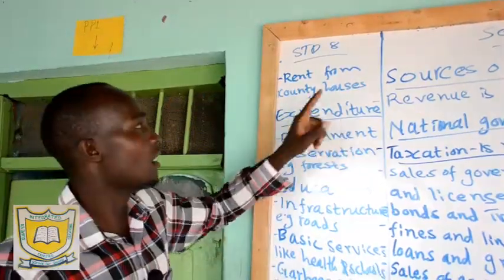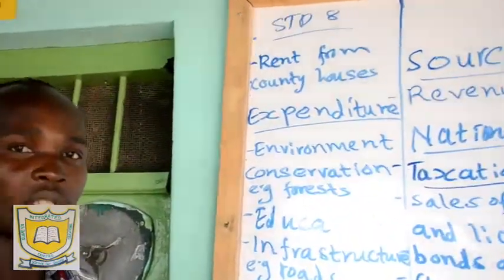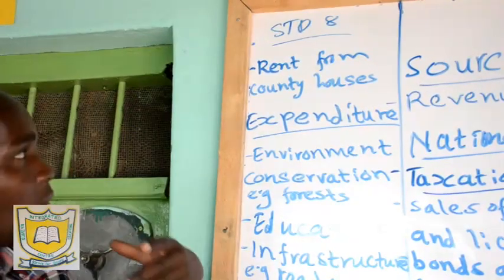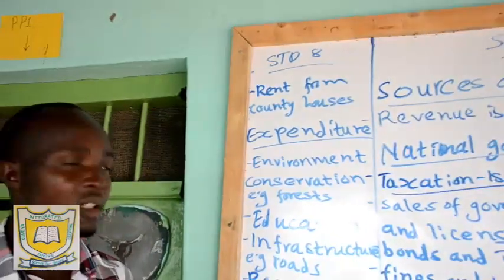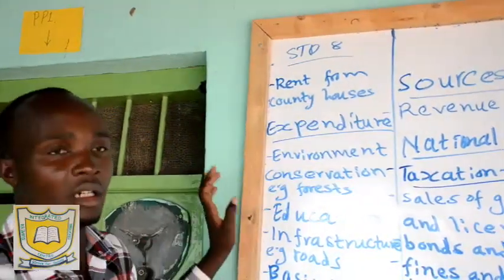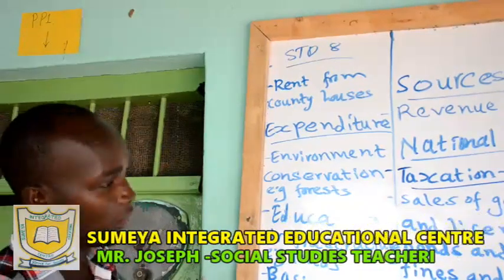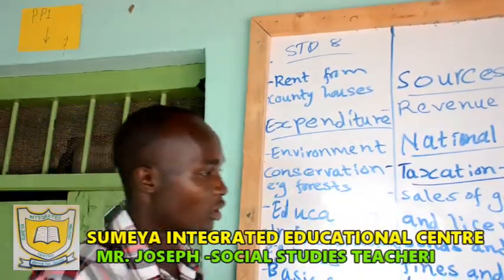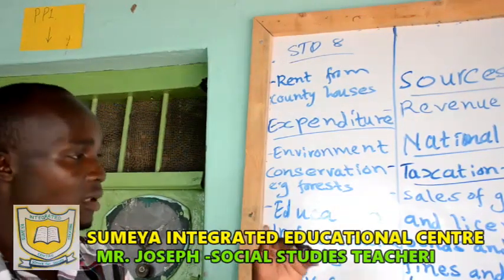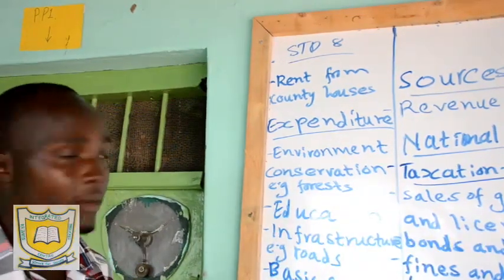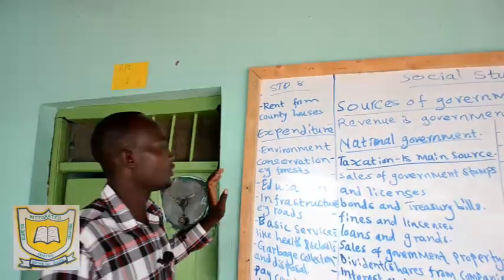Also, county houses that have been built before in towns — houses built by the county government for rentals — the people living there also pay some money to the government. So those are the sources of county government revenue.